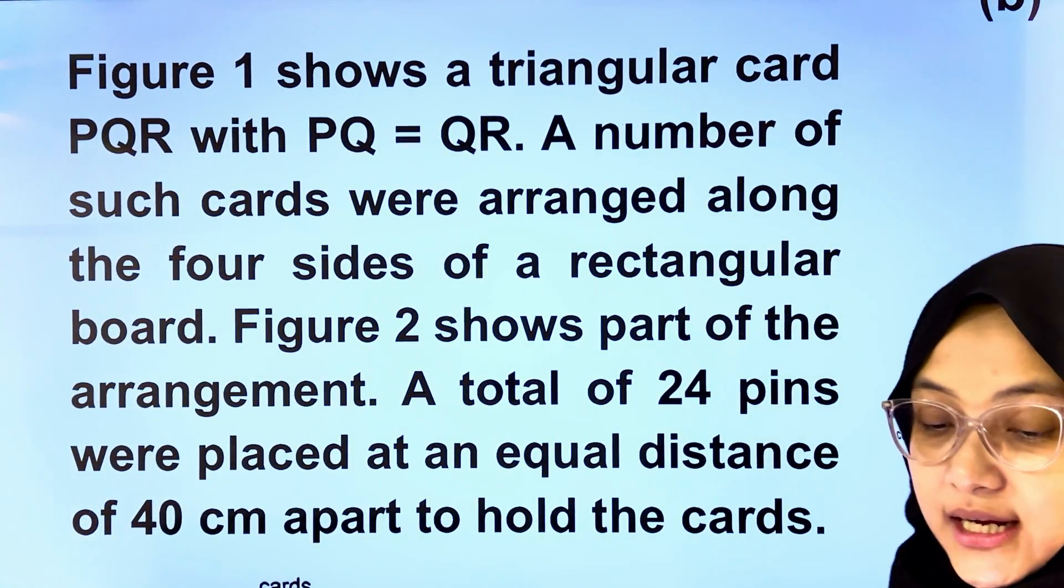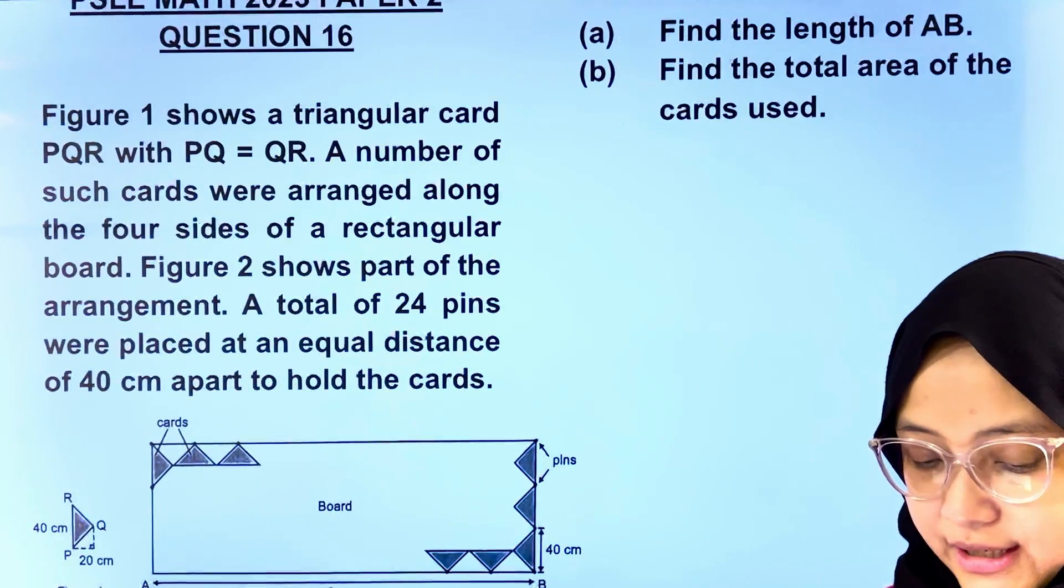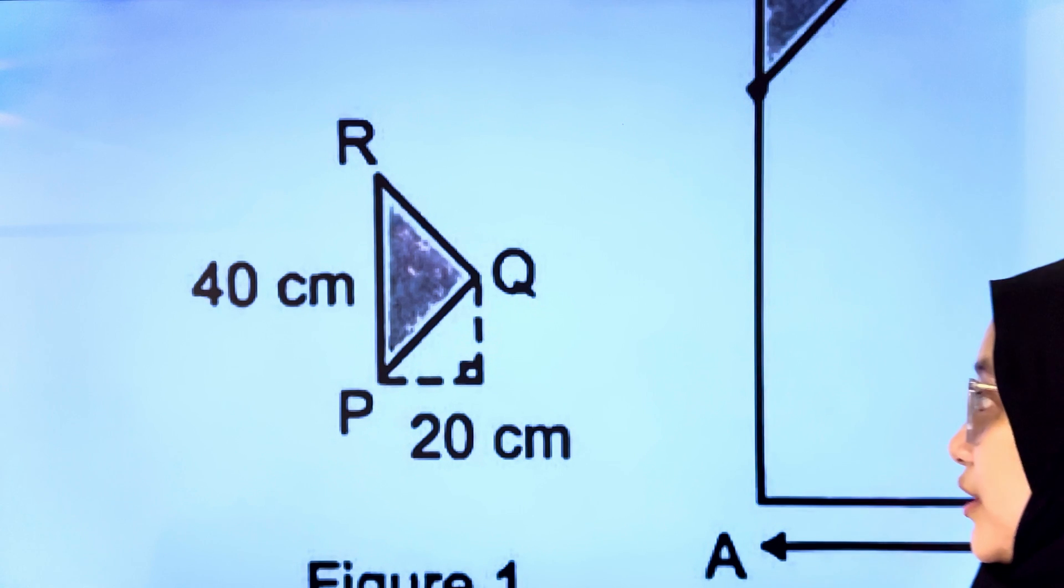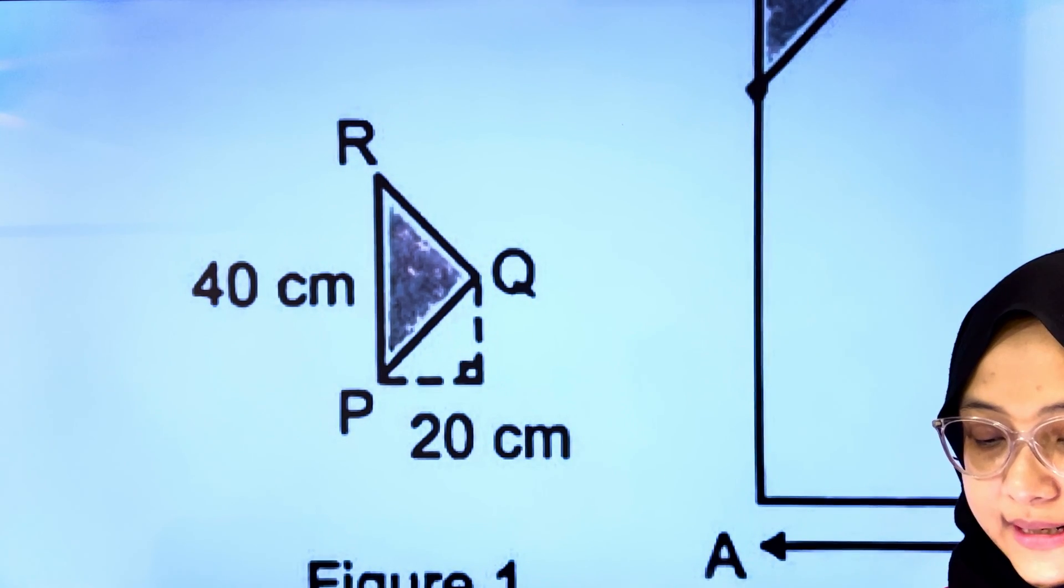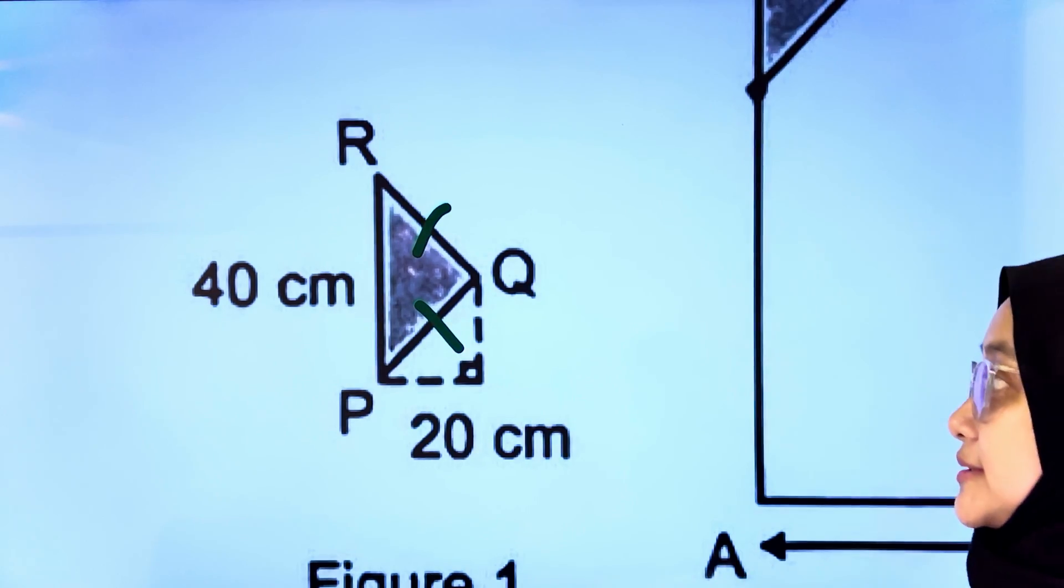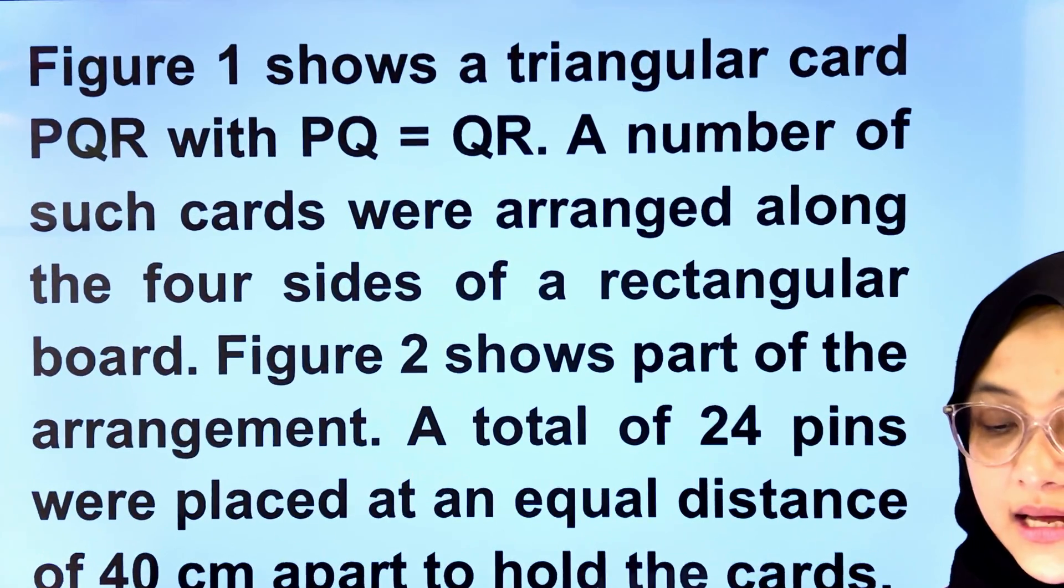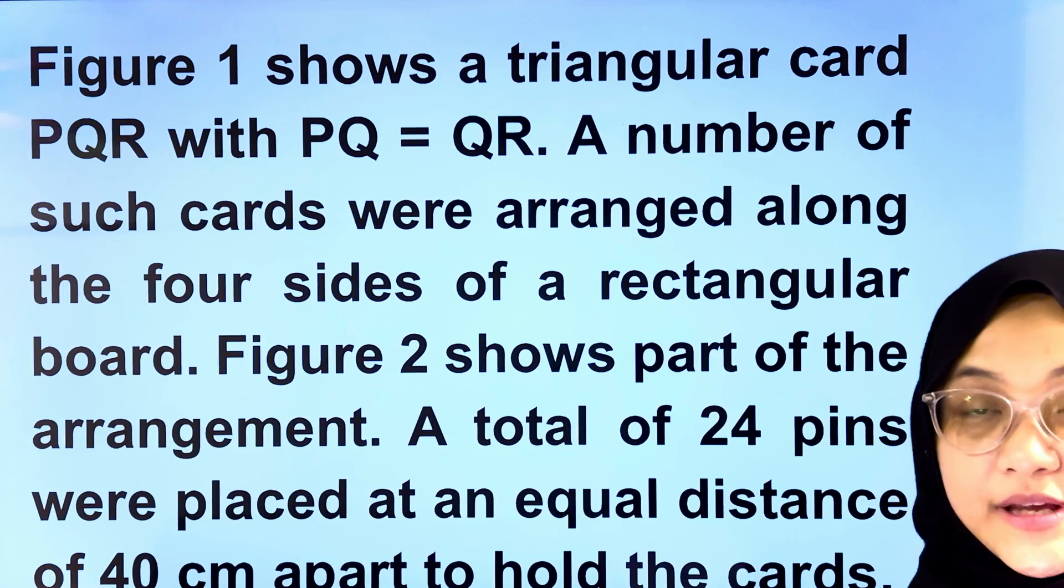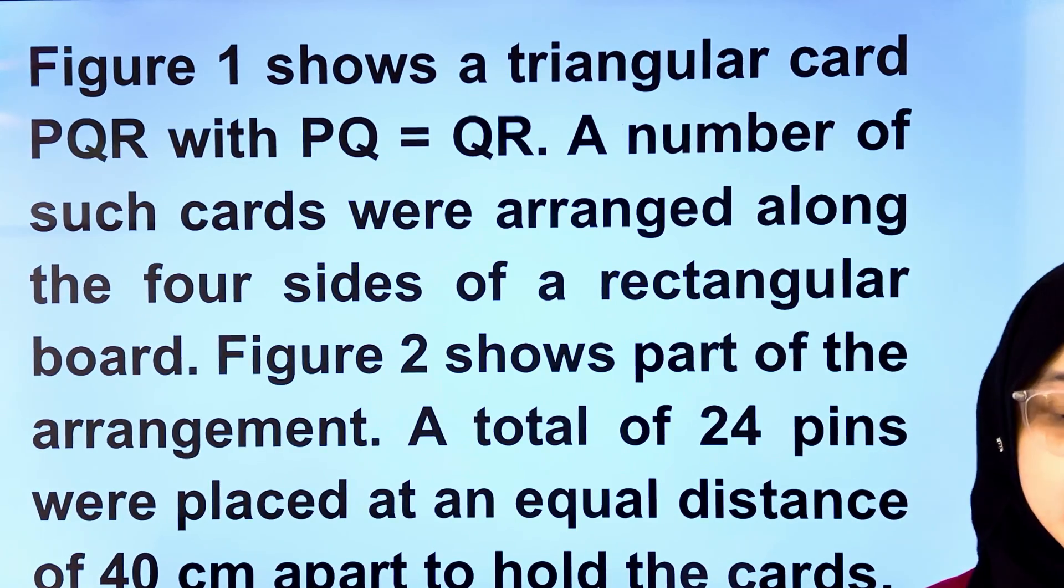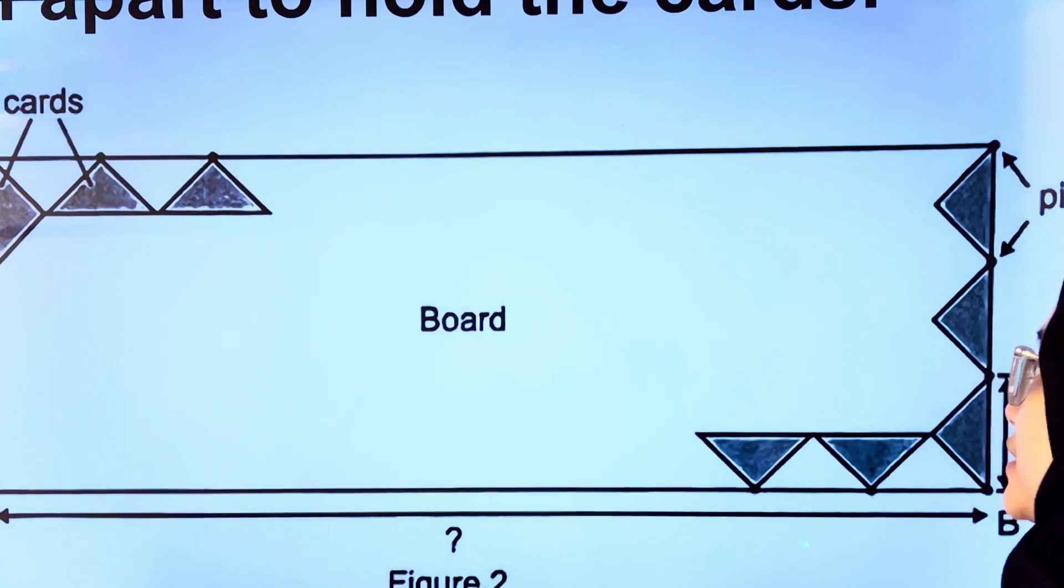Figure 1 shows a triangular card PQR with PQ equals to QR. This is the triangular card here where PQ is equals to QR. Let's continue reading. A number of such cards were arranged along the four sides of a rectangular board. Figure 2 shows parts of the arrangement. This is the board and this is part of the arrangement.